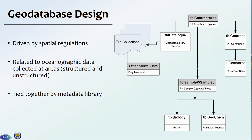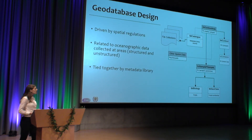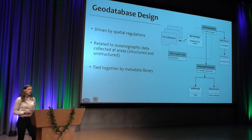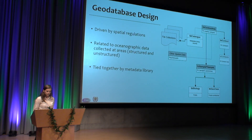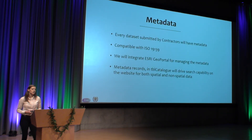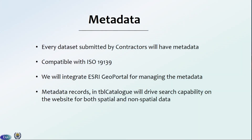Those spatial regulations are really what drives our geodatabase design. The contract areas are a feature class in our geodatabase, related to all of the other tables. We have a sample table connected to our biology and geochemistry table containing all of that environmental and mineralogy data. Our table catalog is where our metadata lives, and we'll be able to query and search on specific metadata records. Every dataset submitted by contractors will have metadata — there are a lot of reports and maps that are unstructured — so we're going to use Esri GeoPortal to manage all that metadata. All those metadata records will live in that table catalog and be searchable on the website.